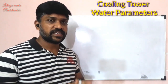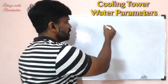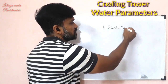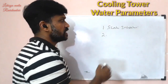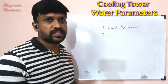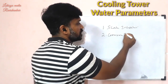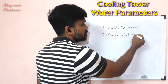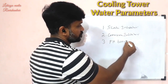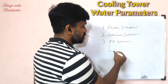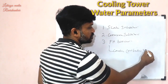Now let's discuss the basic chemicals or chemical treatment for cooling towers. First is scale inhibitor — this prevents scaling and keeps heat transfer effective. Second is corrosion inhibitor. Third is a pH booster chemical, such as caustic soda or sodium borate, used to maintain proper pH levels.